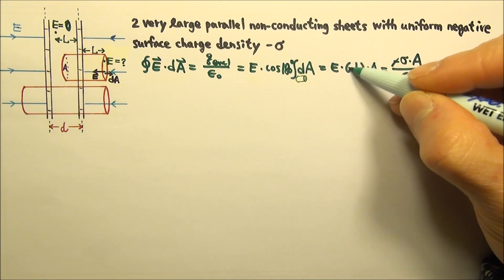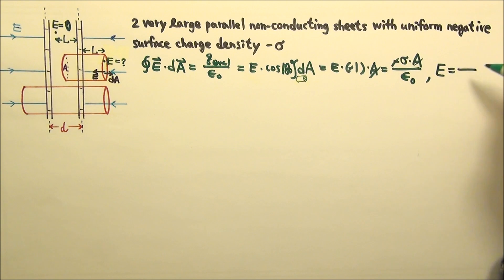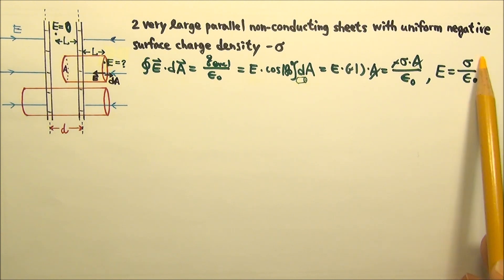And the negative cancels, A cancels. We get the magnitude of the electric field is sigma over epsilon naught.